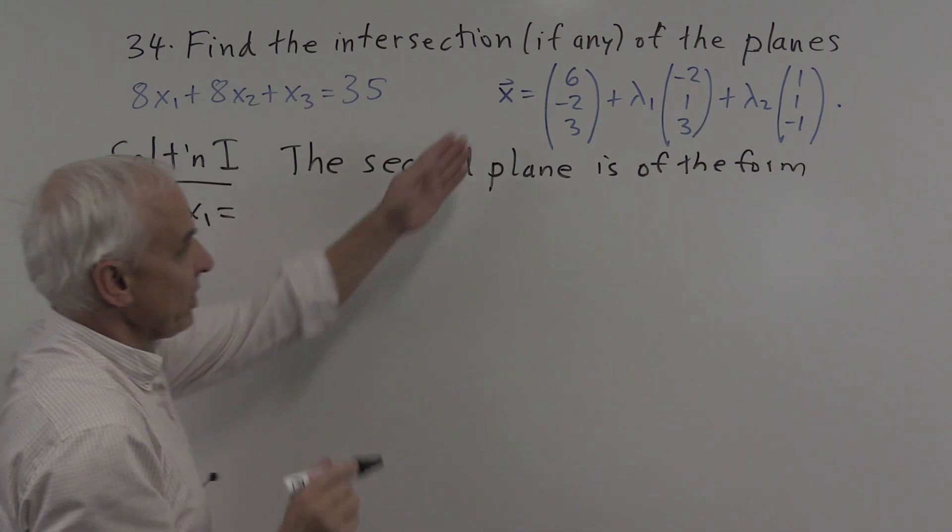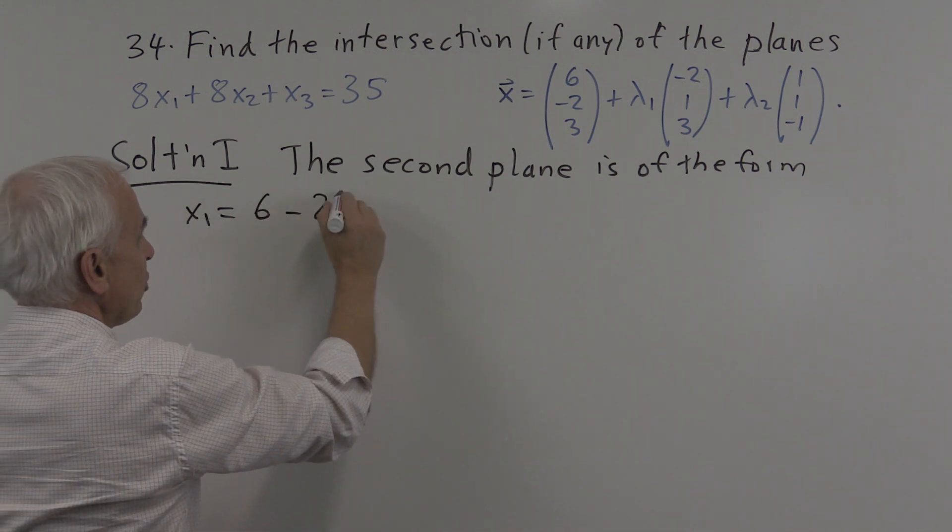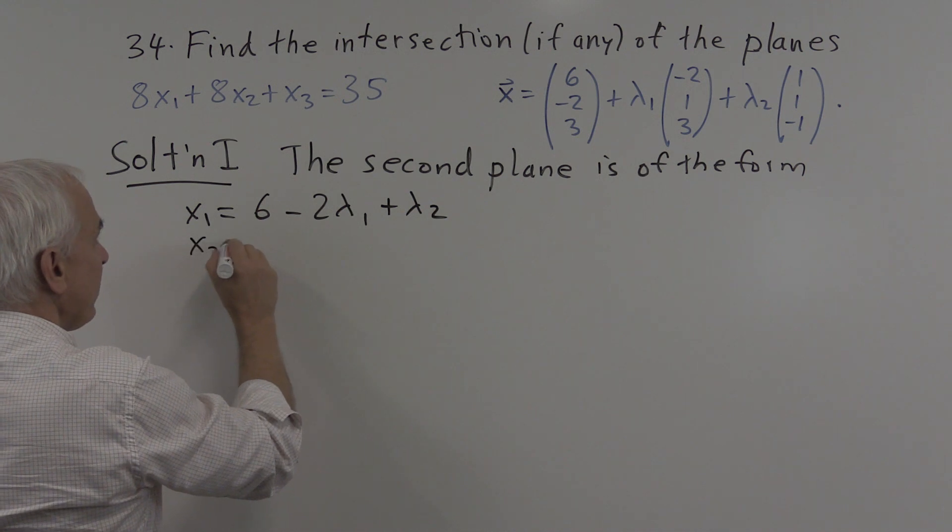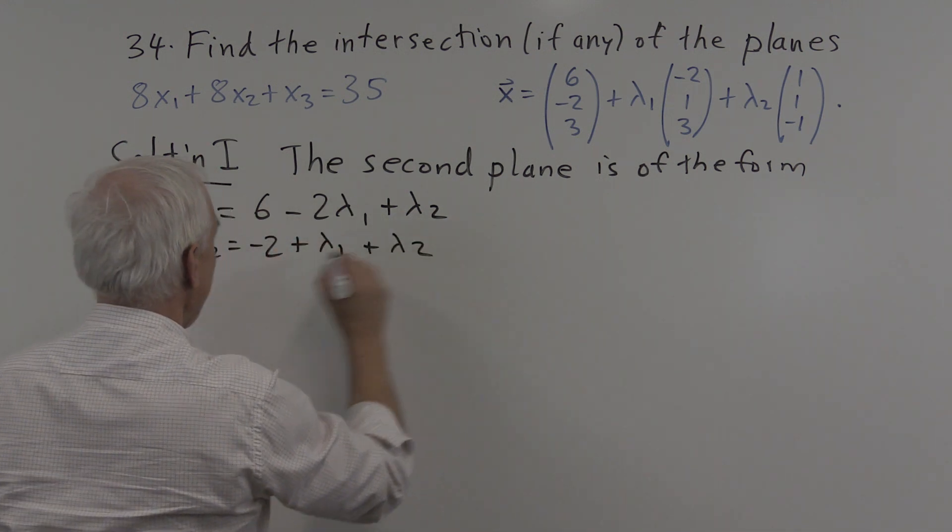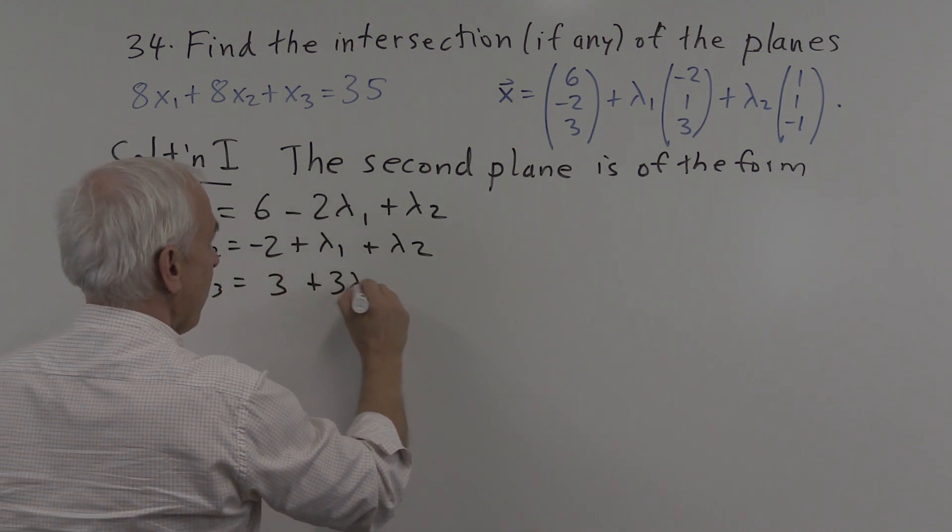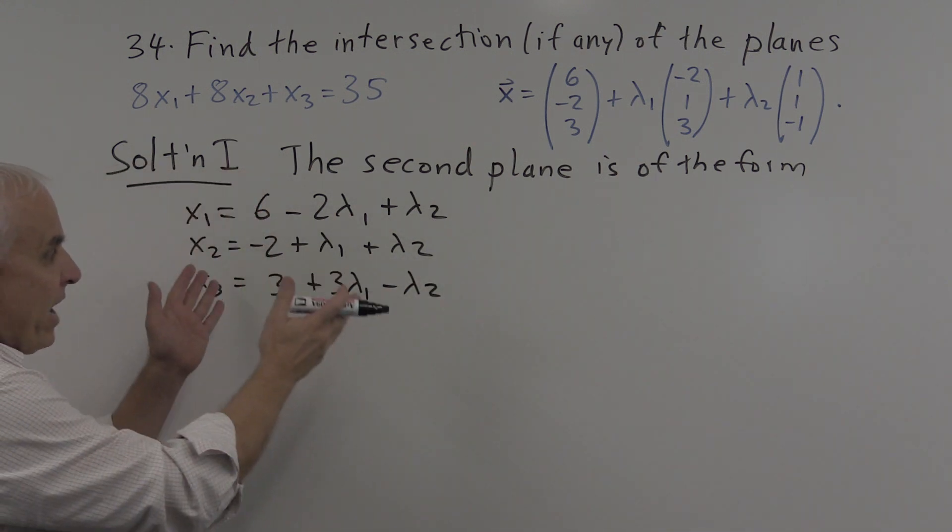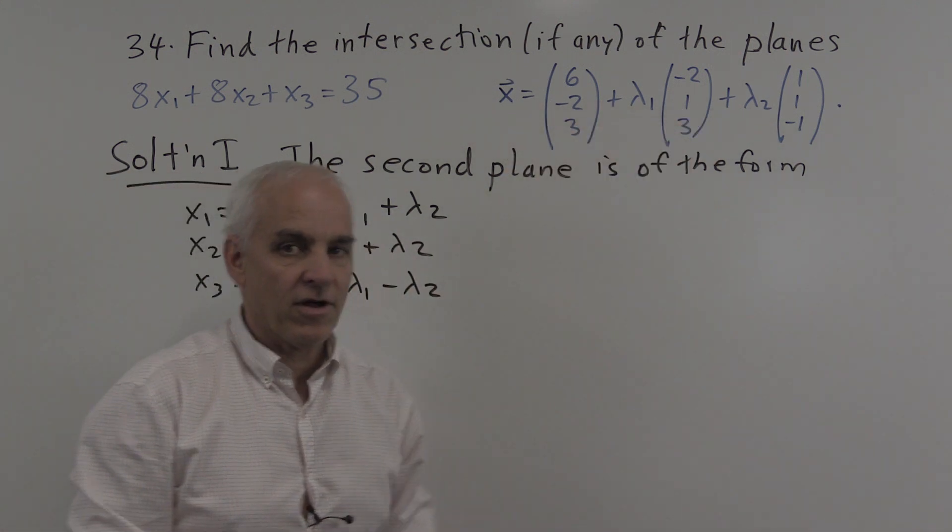Alright, this can be reinterpreted saying the x1 coordinate is 6 minus 2 lambda 1 plus lambda 2. The x2 coordinate is minus 2 plus lambda 1 plus lambda 2 and x3 equals 3 plus 3 lambda 1 minus lambda 2. Those three equations have the same content as this single vector equation.